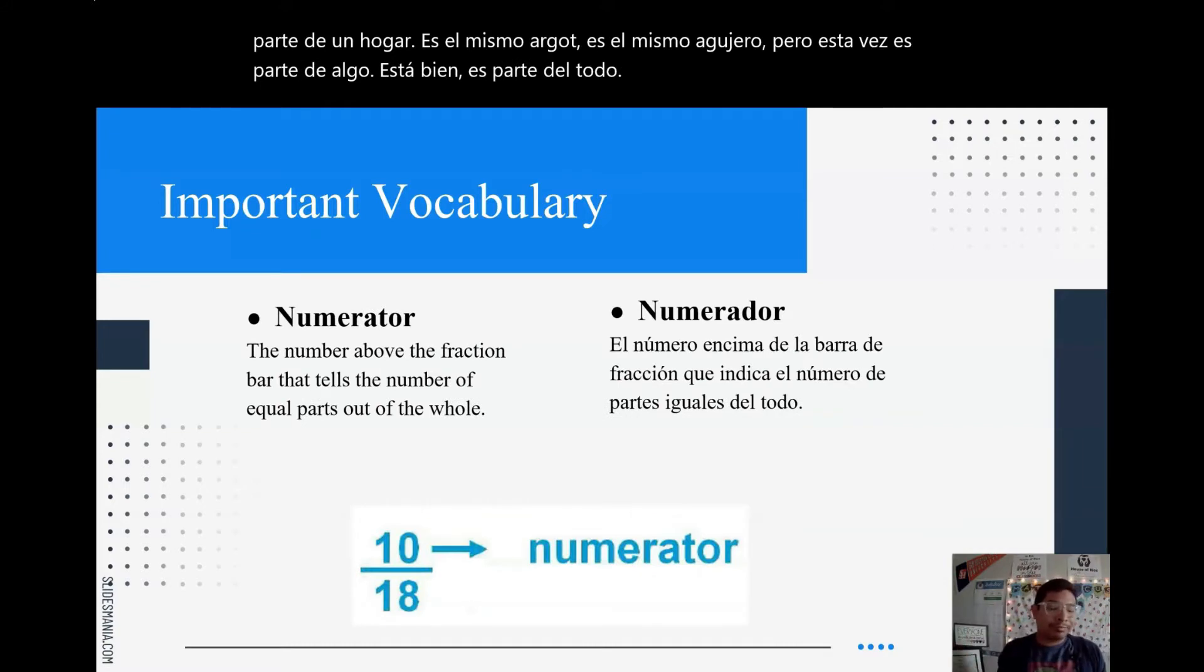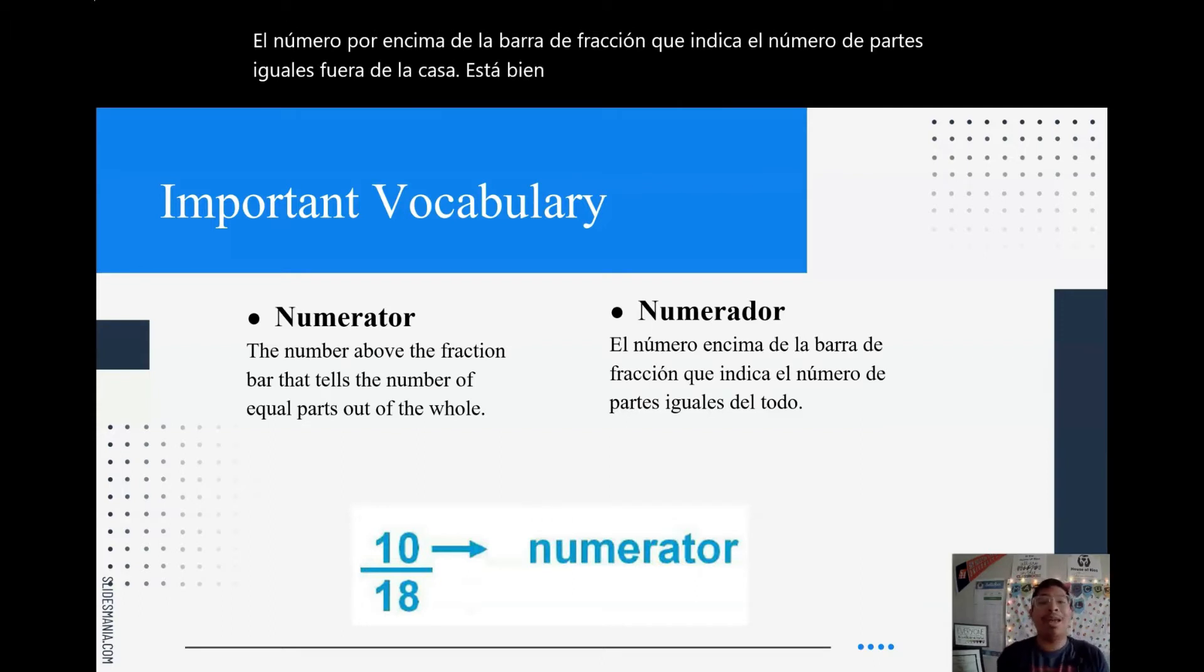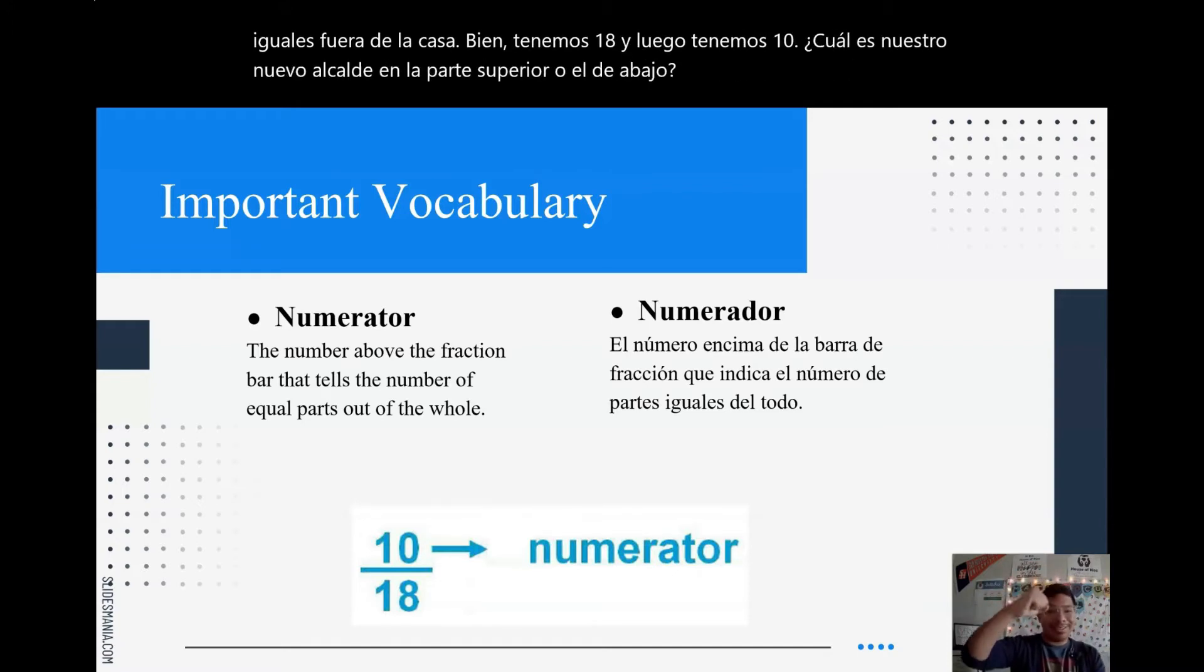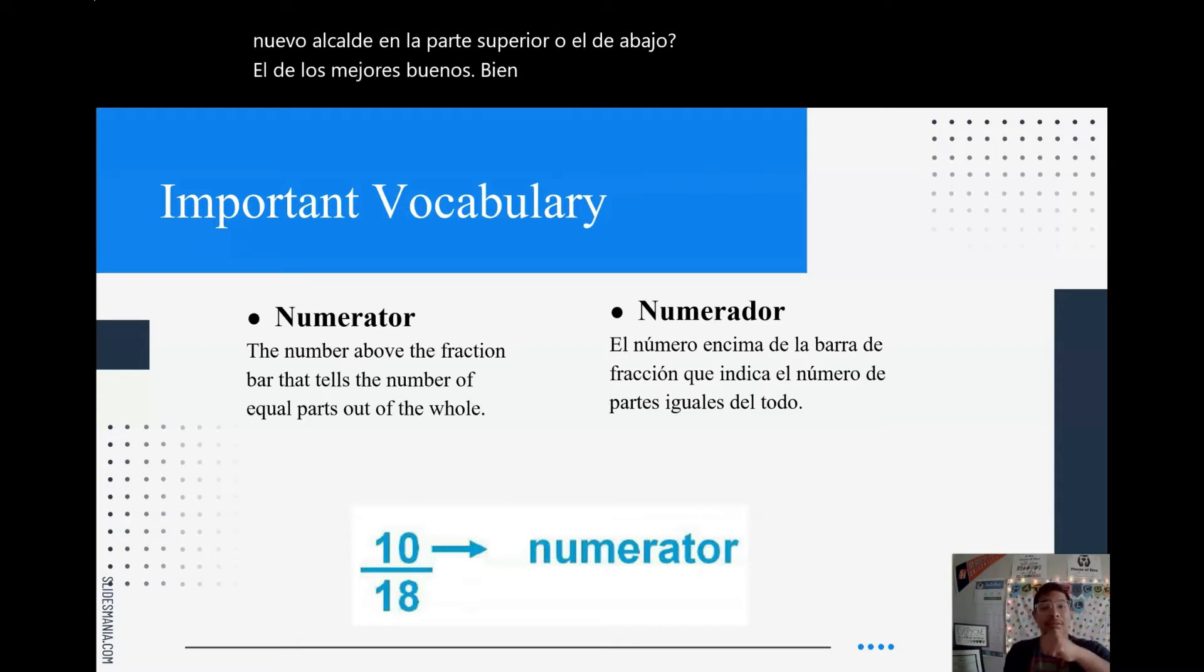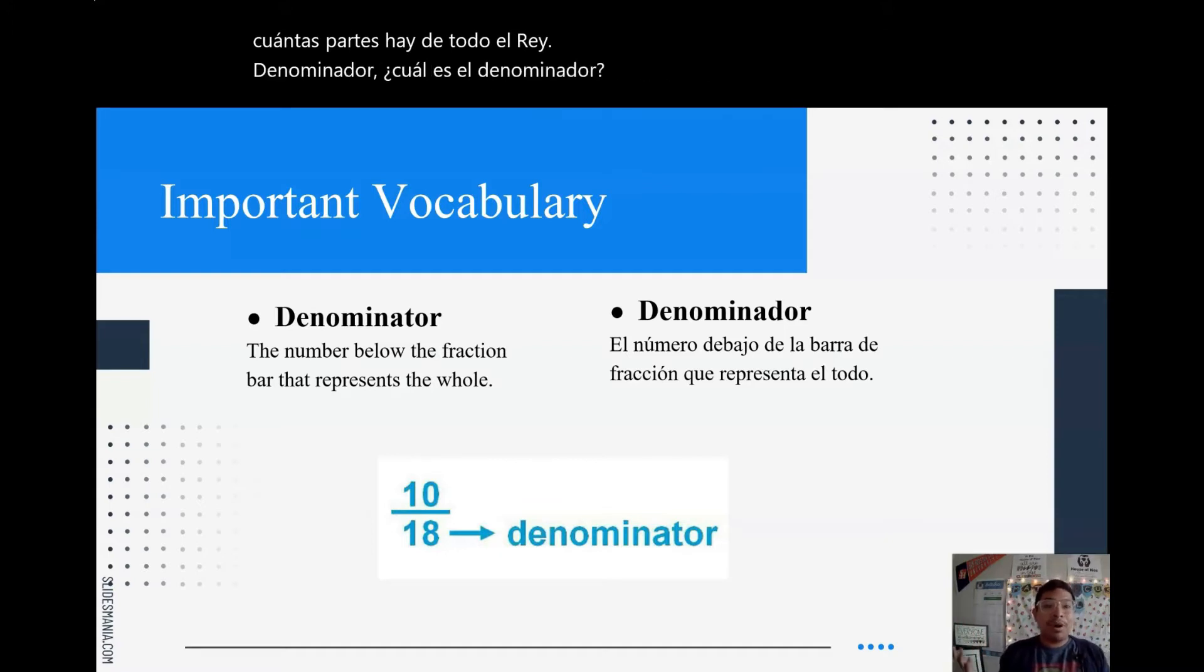Numerator. What's a numerator? The numerator above the fraction bar tells the number of equal parts out of the whole. So we have 18, and then we have 10. Which one is our numerator? The one on the top or the one at the bottom? The one at the top. Good. So that's our numerator. That tells us how many parts there are out of the whole. The denominator is the number at the bottom. That tells us how many pieces there are in total. So total on the bottom, how many equal parts there are on top.